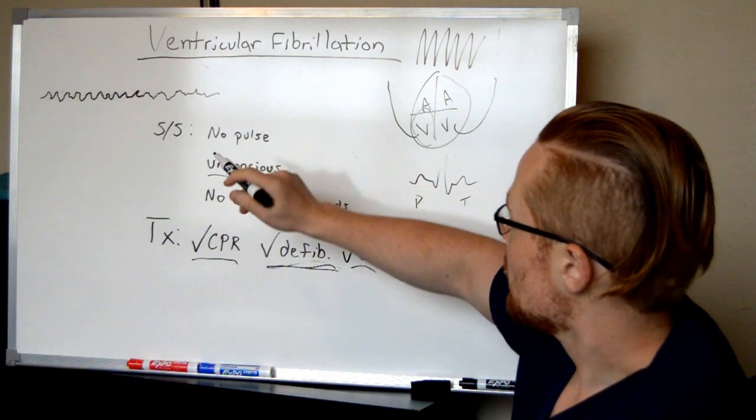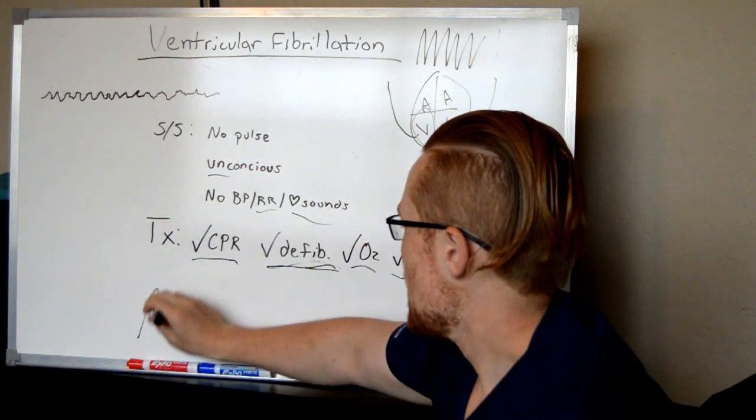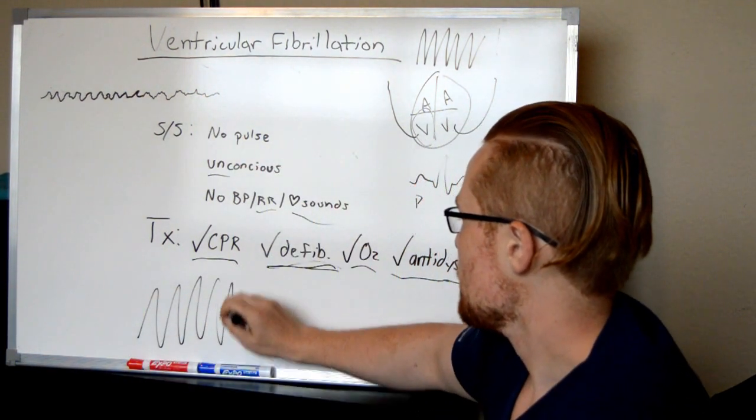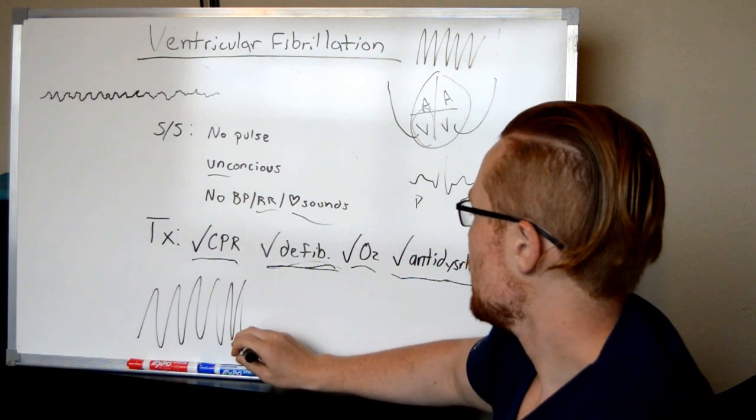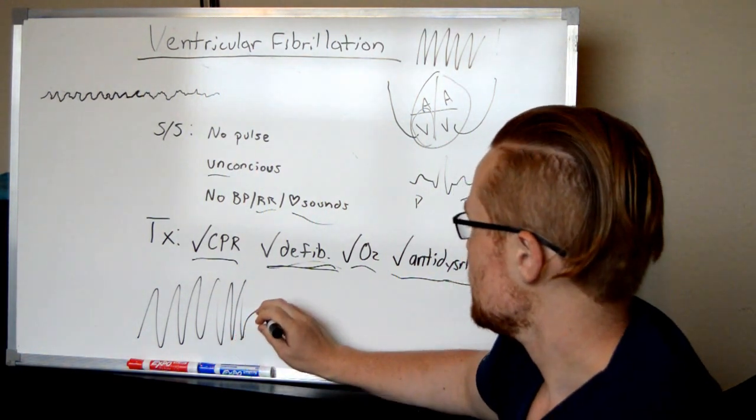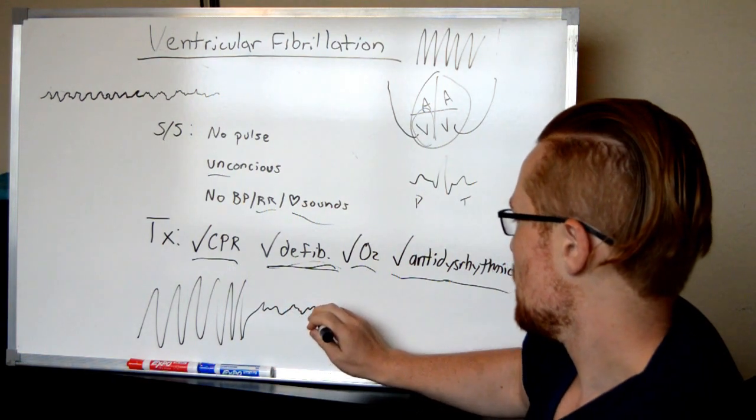So ventricular fibrillation, I told you here's V-tac because there's still contractions, they may still have a pulse, and this puts them at risk for going into V-fib, and you can tell because now it is just quivering.